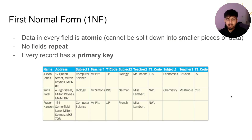First Normal Form: data in every field must be atomic, meaning it cannot be split down into further smaller pieces, no field should repeat, and every record has a primary key. As you can see in this table, address can be split down into further sections, name can be split down into first name and surname, and the subject fields are repeating — which means this is not in First Normal Form.